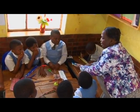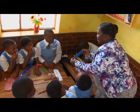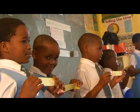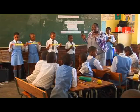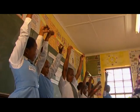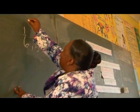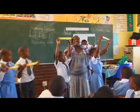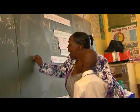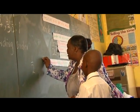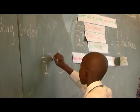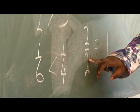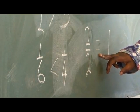We first measure the strip. The strip is 30 centimeters. Look carefully — look at fifths. Now we are going to order the fractions in ascending order. Which one is the smallest? This is ordering fractions. A half is bigger than a third. Half is bigger than the third. Write the symbol. Two halves is equal to one.